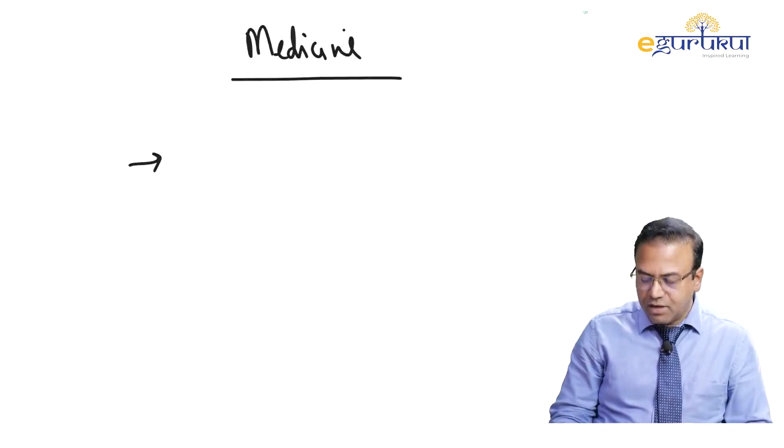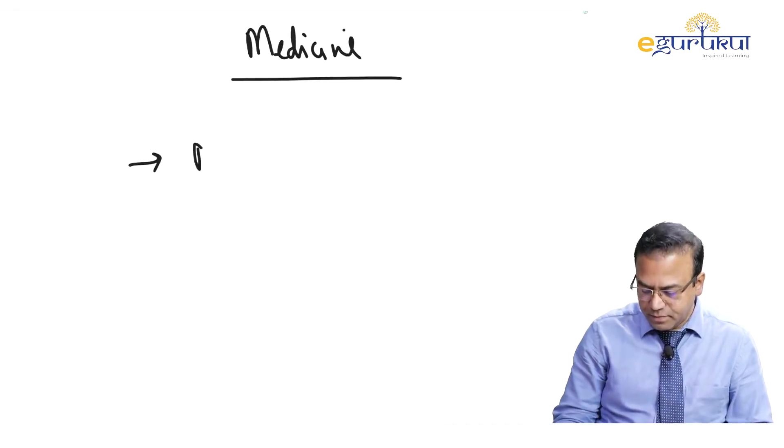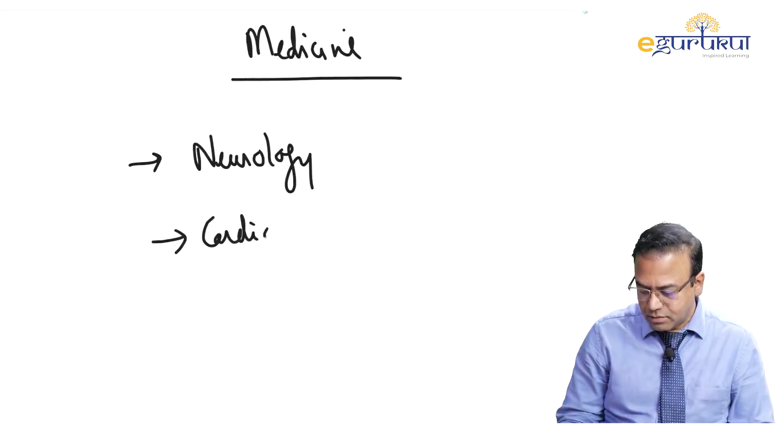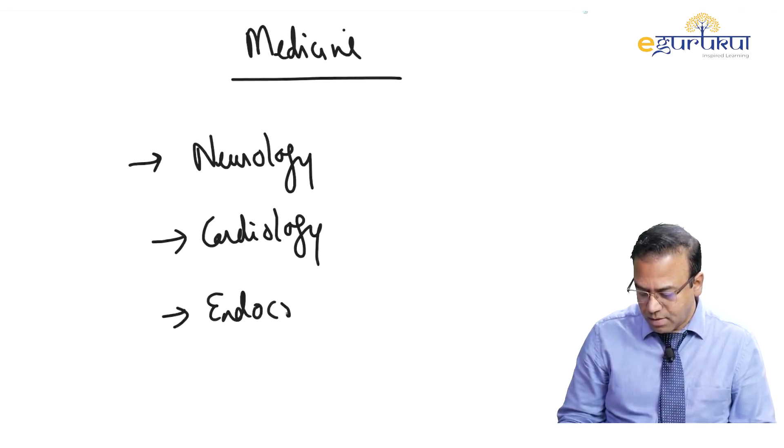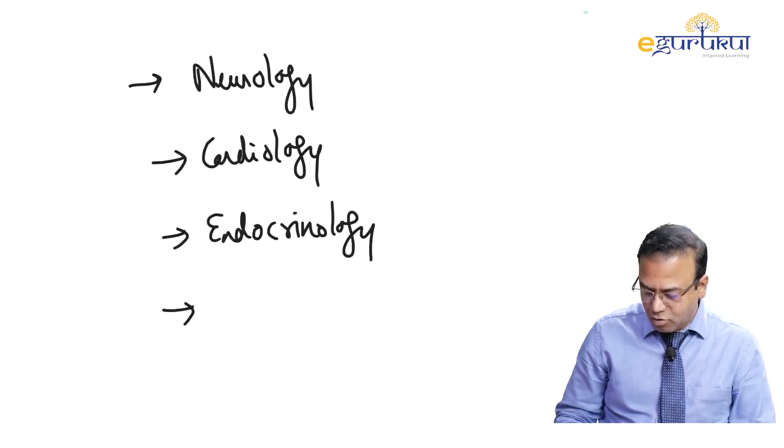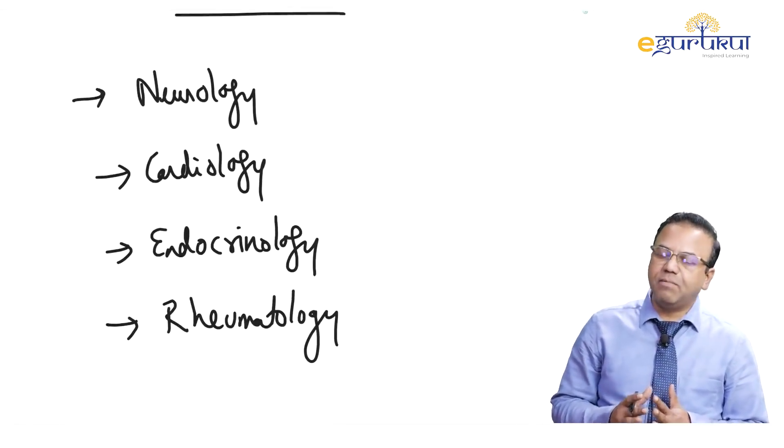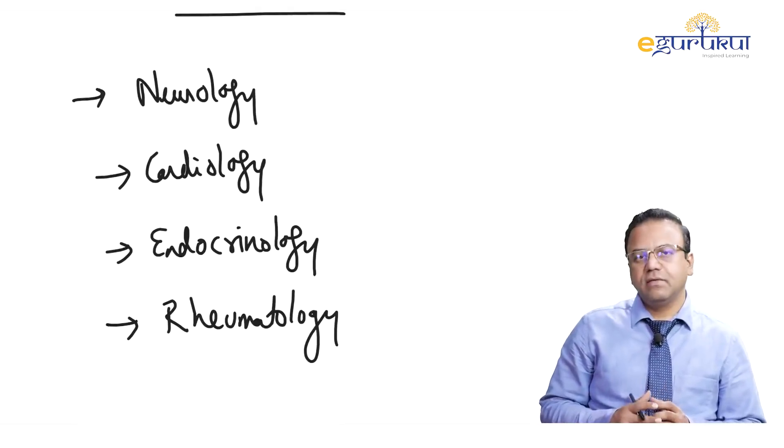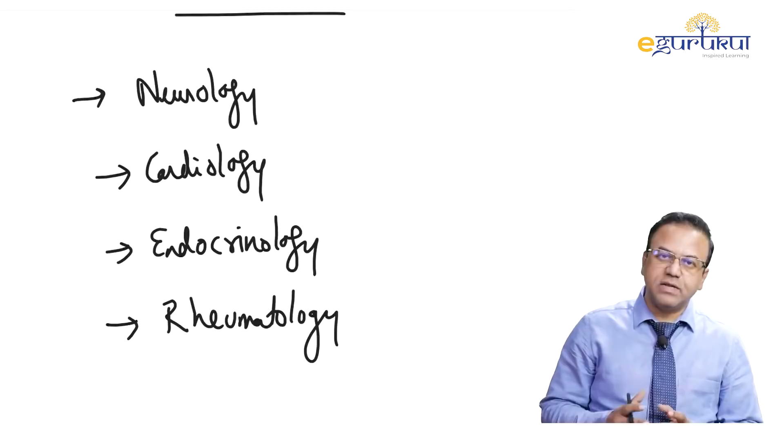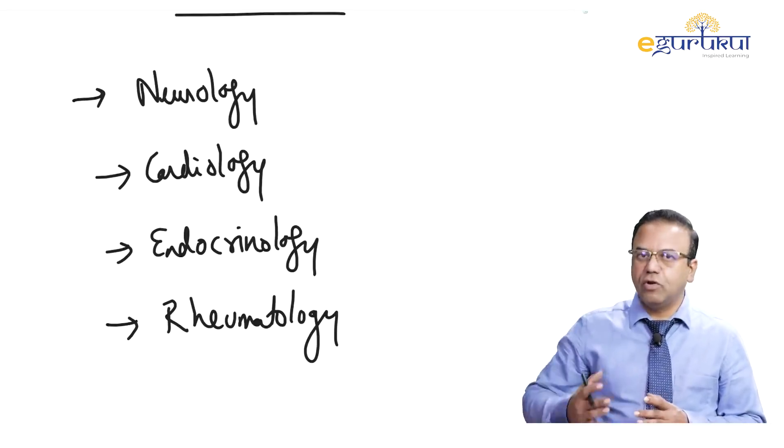The major chunk of questions in medicine, where do they come from? They are mainly in four important topics: neurology, cardiology, endocrinology, and rheumatology. One of the reasons why these four sections are extremely important is the overlap between other subjects with these are very less.